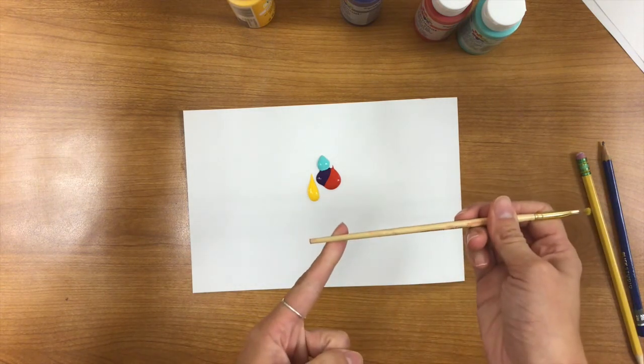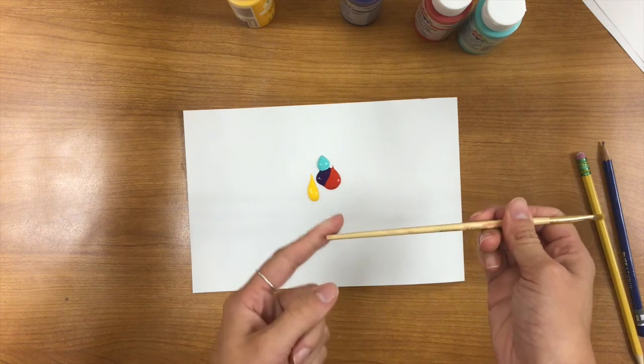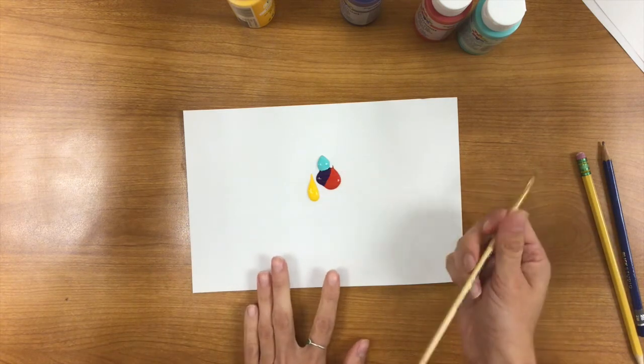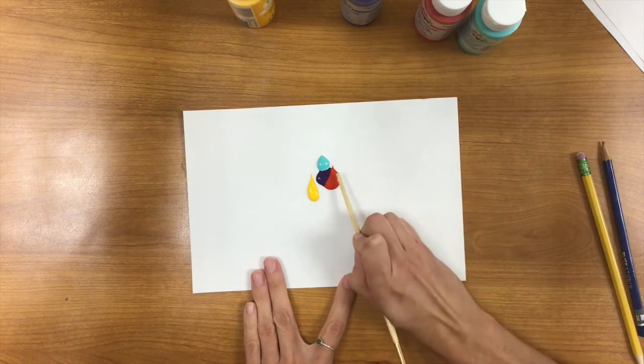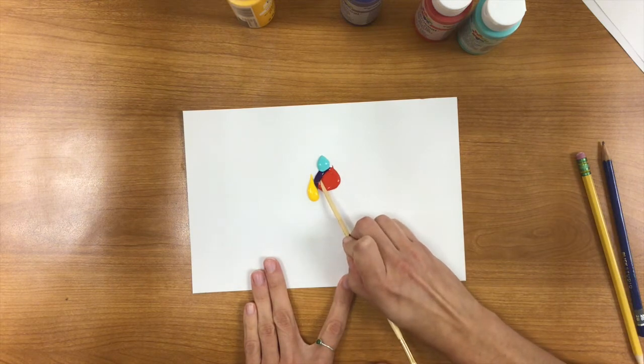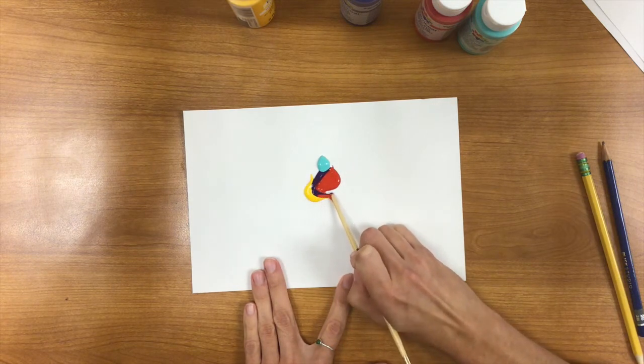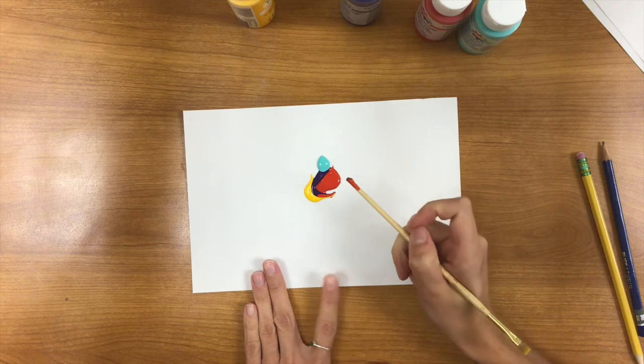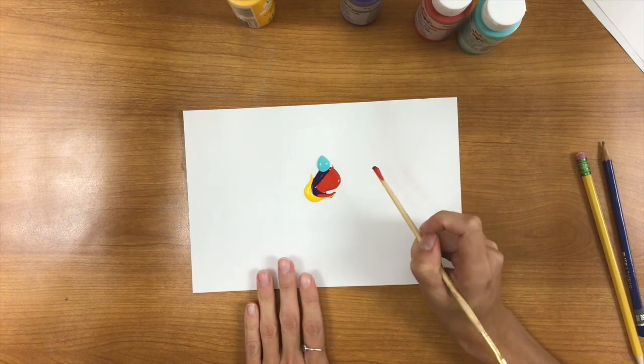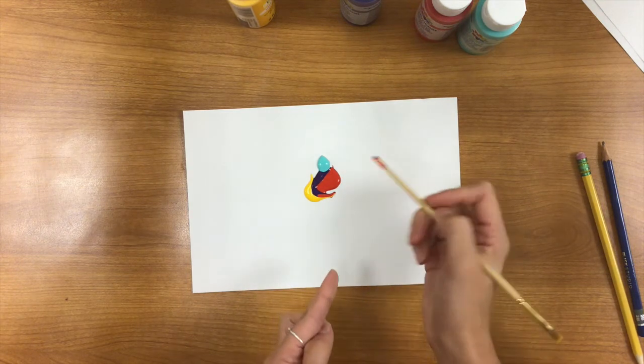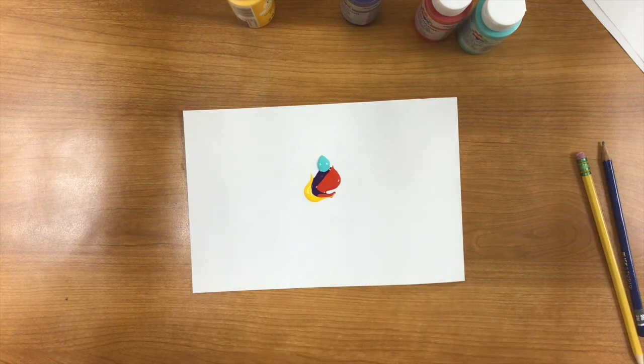Then you're going to take the back end of a paintbrush and then you're going to gently, gently swirl it around. You might want to have a paper towel on hand so you can wipe off the end so you don't contaminate too much.